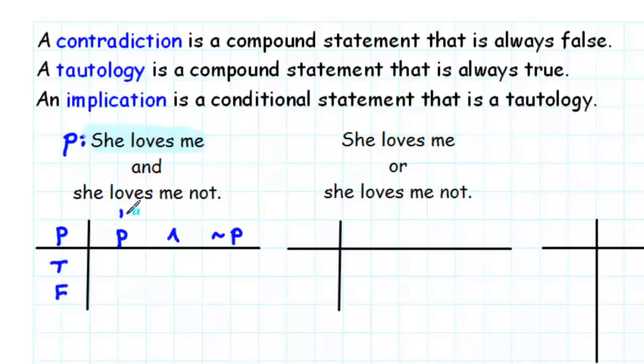So first of all, we'll fill in column P, and then column not P, and then finally we'll form the conjunction of columns one and two.